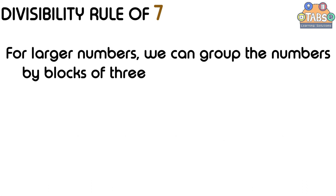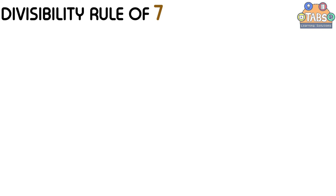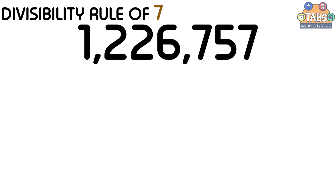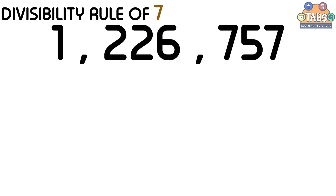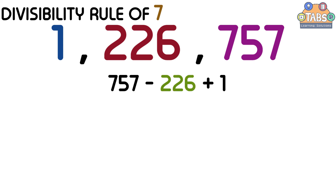For even larger numbers, we can group the numbers by blocks of 3, and arrange them from right to left. Then we would alternately subtract and add the numbers in each block. Now let us try this example: 1,226,757. We group the numbers by blocks of 3, giving us 1 | 226 | 757. Arranging from right to left, it becomes 757, 226, 1. Then alternately subtracting and adding: 757 minus 226 plus 1, which is equal to 532.